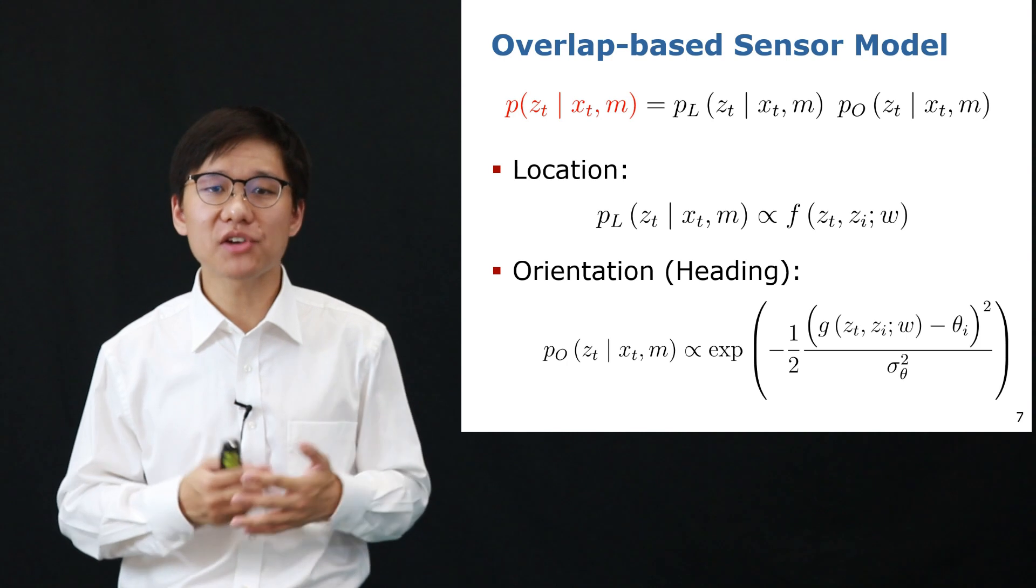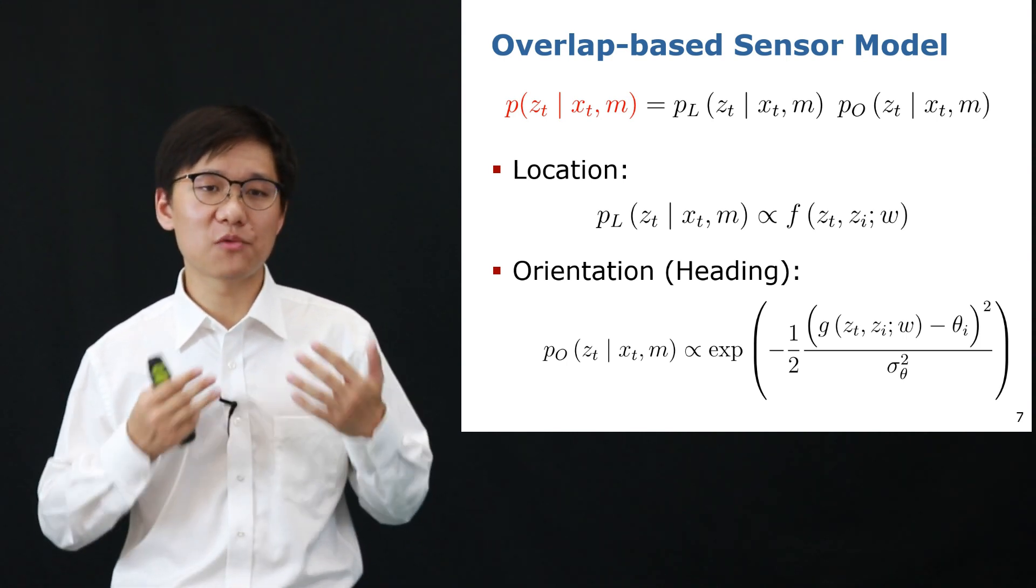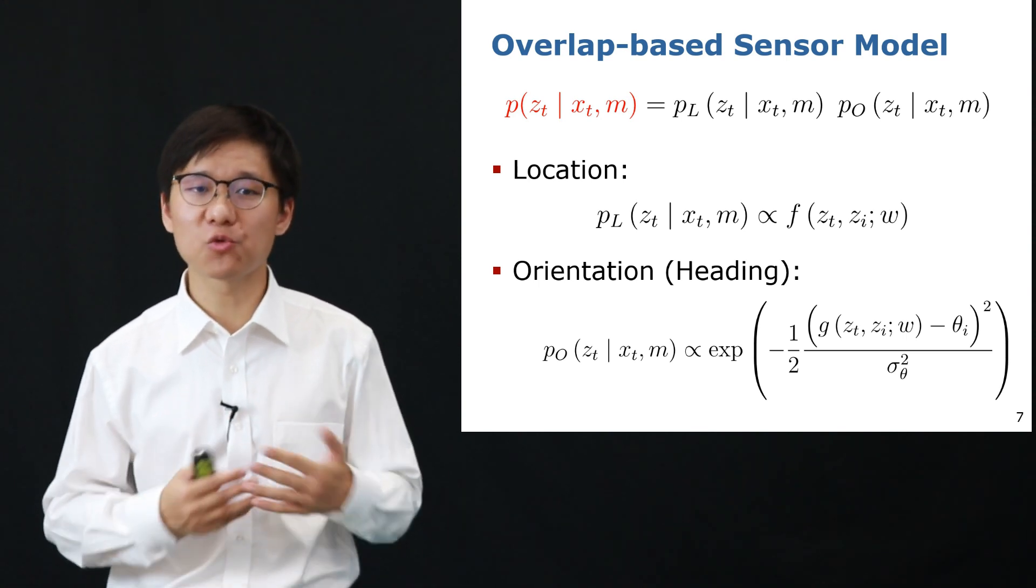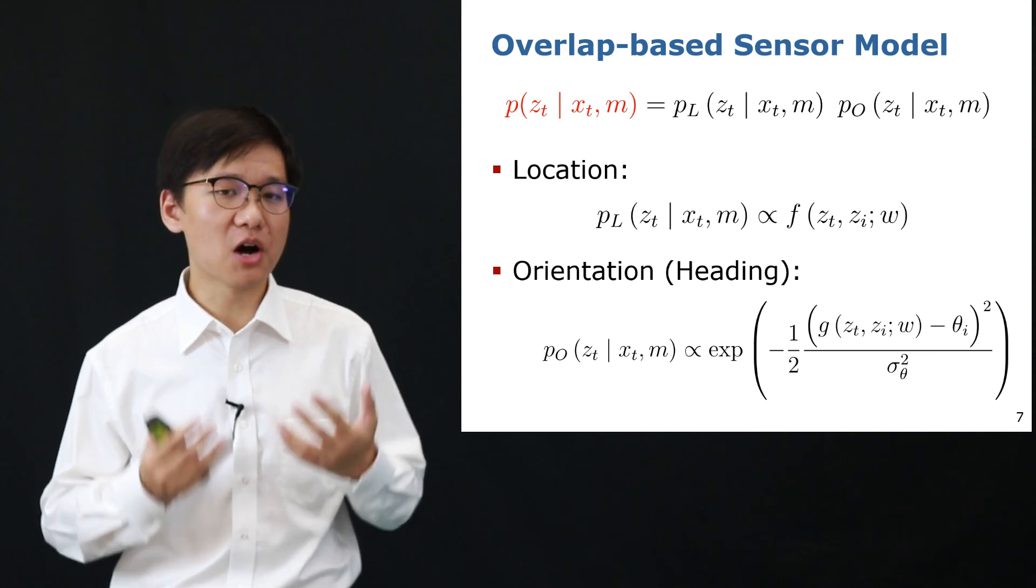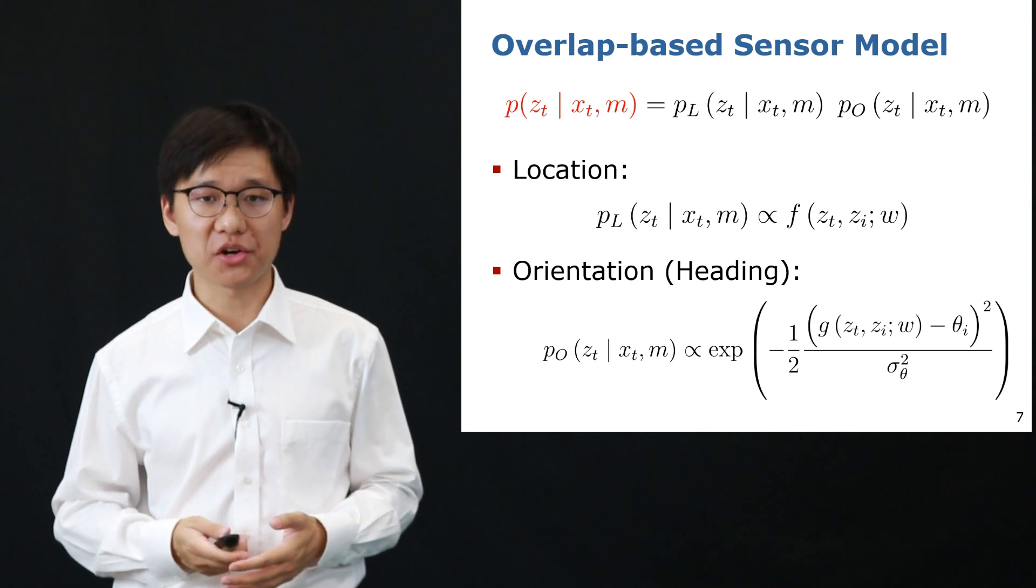While for the orientation likelihood, we calculate it using the Gaussian model of the relative yaw angle offsets between the query frame and the map frame. And in this way, we can formulate the observation model with OverlapNet estimates and update the weights for each particle.